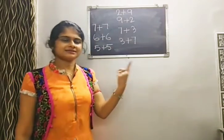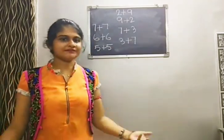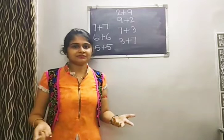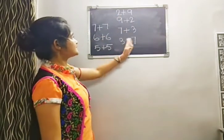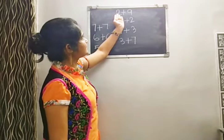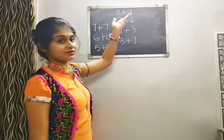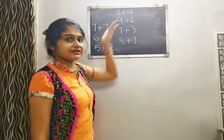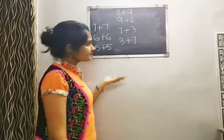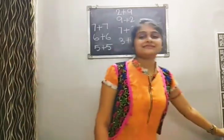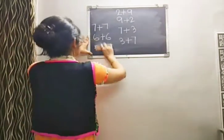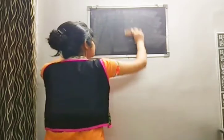Immediately you can answer: 7 plus 7 is 14, 6 plus 6 is 12, 5 plus 5 is 10. These are all easy numbers — easy combinations. But out of all combinations, 16 combinations are difficult combinations.